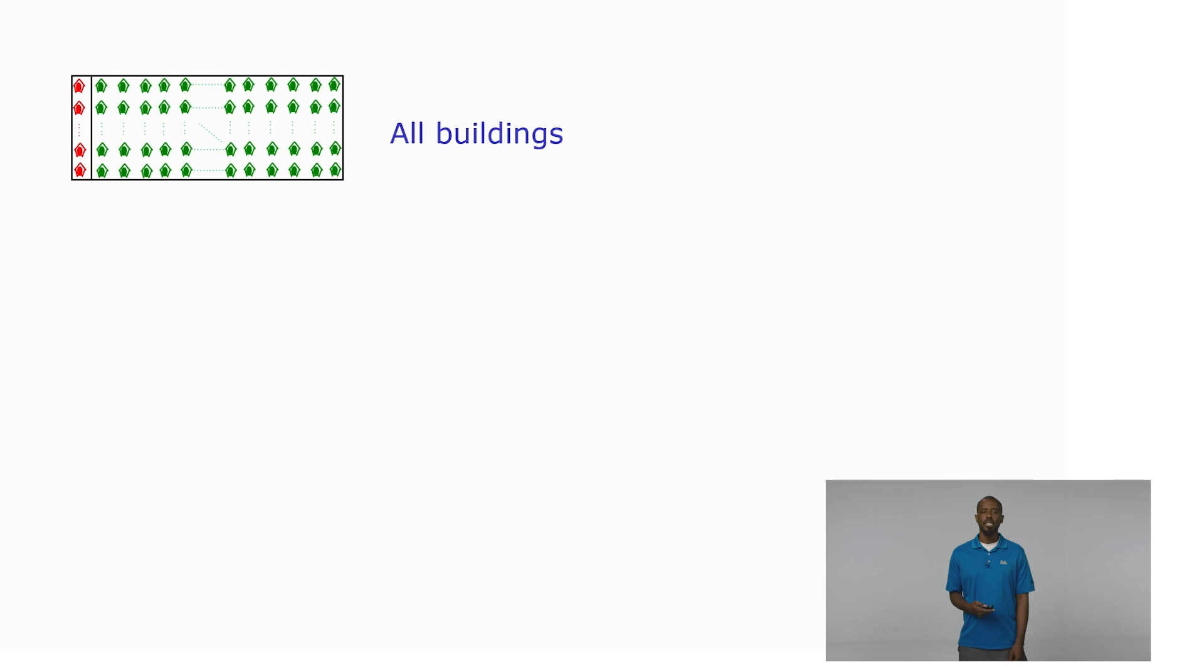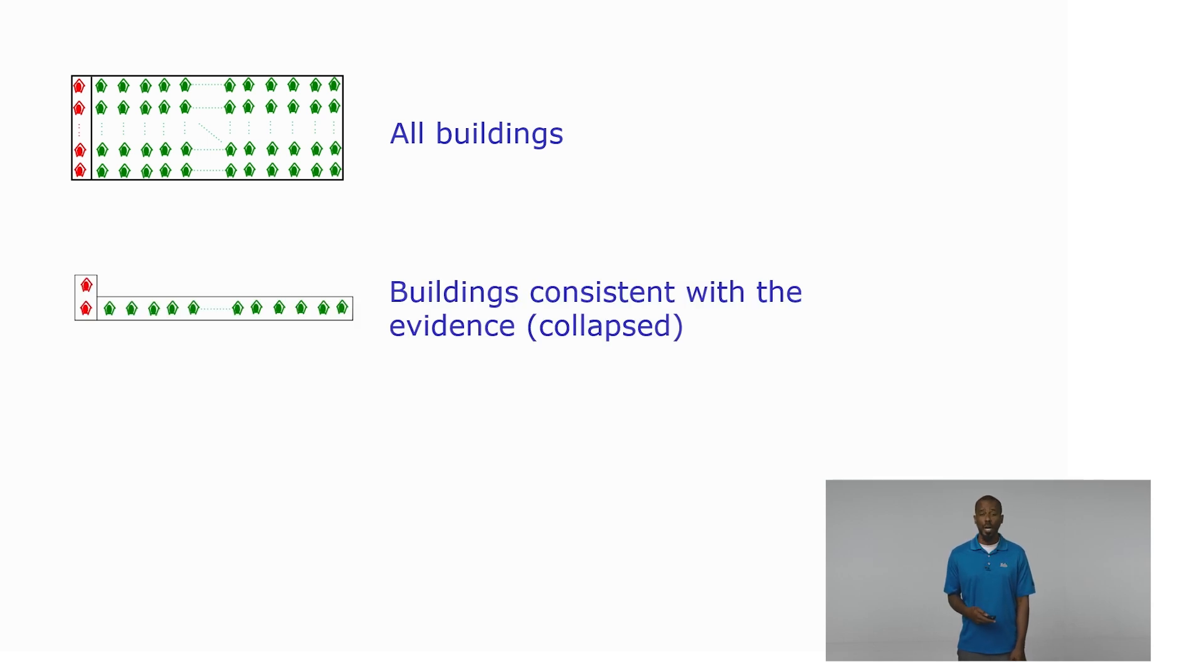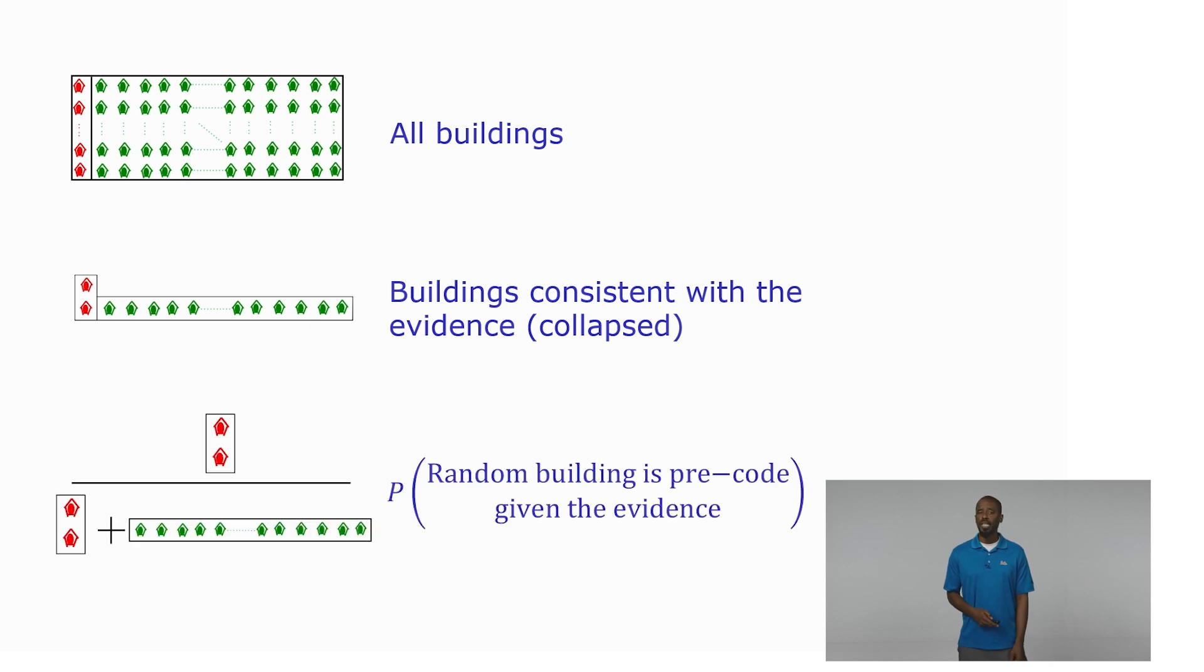Well, we can frame the problem as what's the likelihood that a random building in our inventory is pre-code. Now if we consider our sample inventory, we know that this number is roughly 5%. Then we can say our evidence represents the fact that an earthquake happened and a building collapsed. So that means we can restrict our sample space only to the expected number of collapsed buildings. Then we computed the probability that a random building is pre-code given that it collapsed during the earthquake. Again, the fact that this building collapsed during the earthquake represents our evidence.